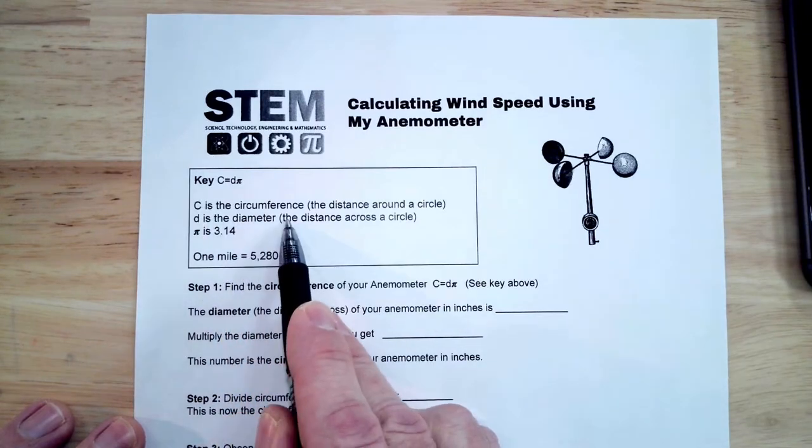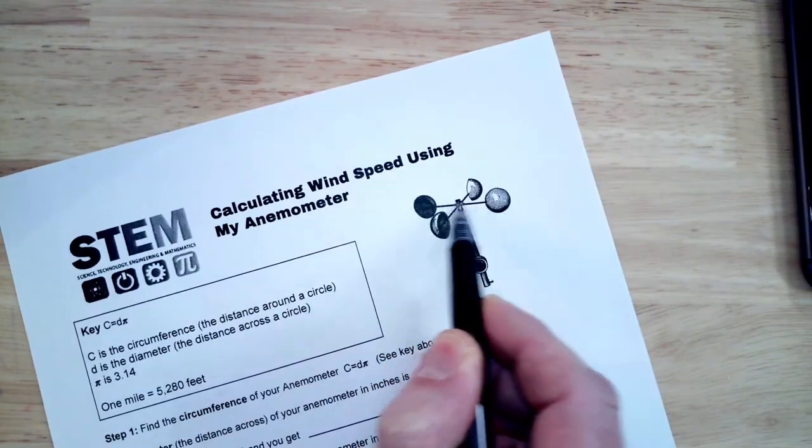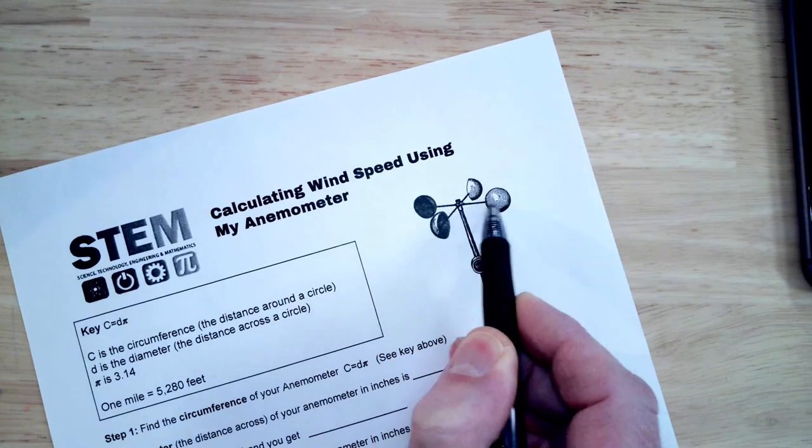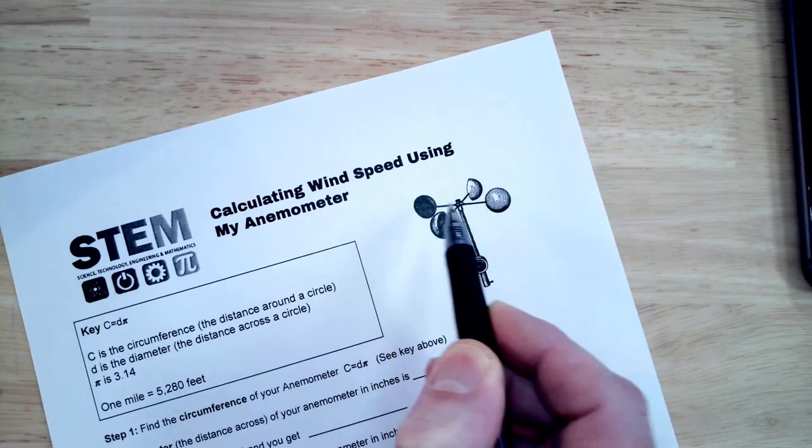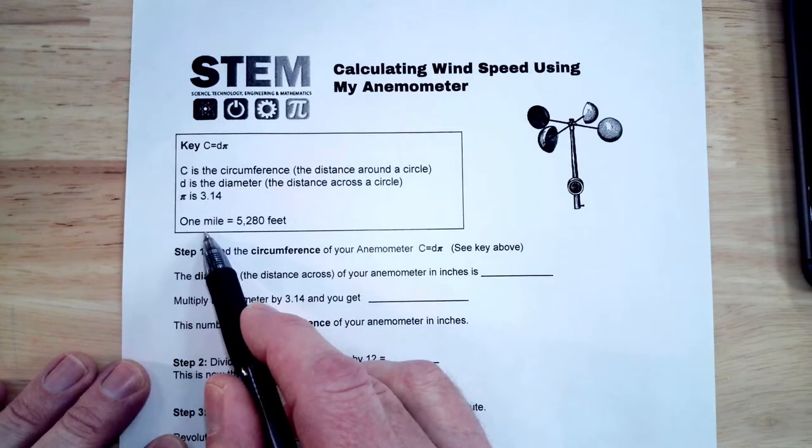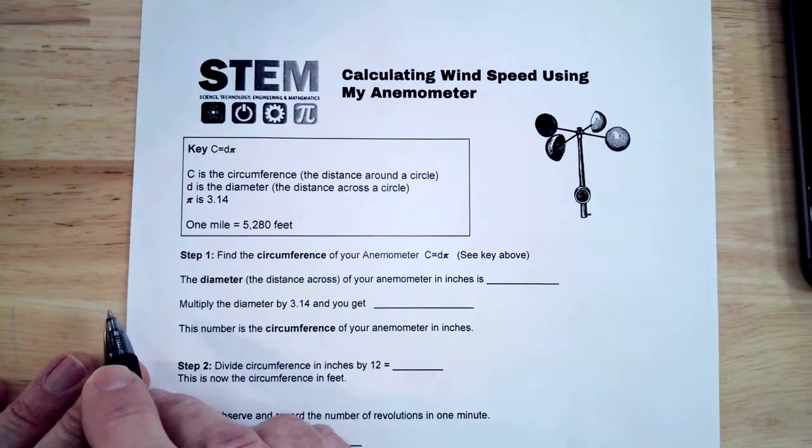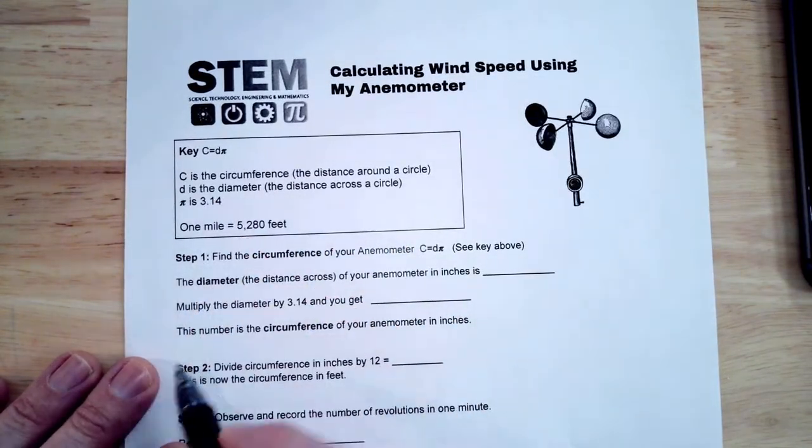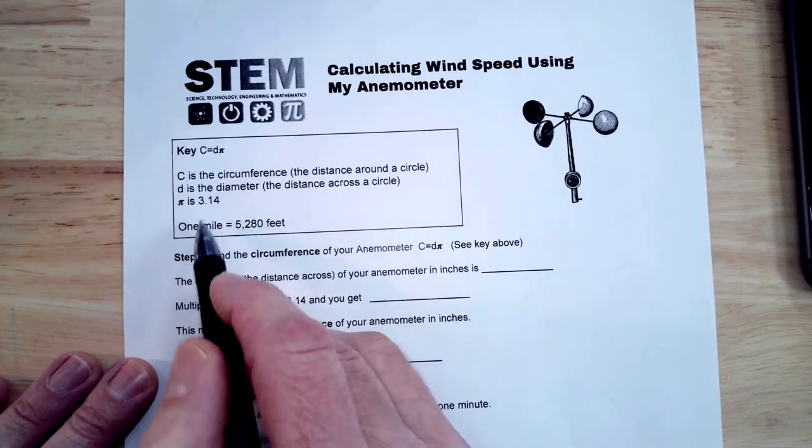D is the diameter, that's the distance across, so that would be the distance across your anemometer from edge to edge, from cup to cup. And then pi, you know that pi is 3.14. That's coming up in a couple weeks actually, March 14th, we celebrate pi day.